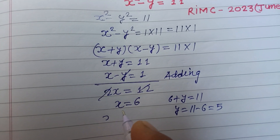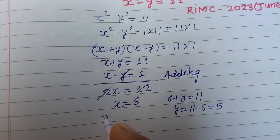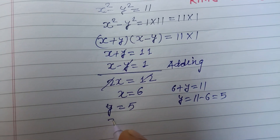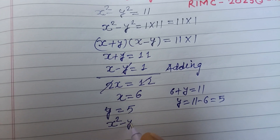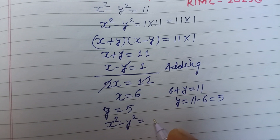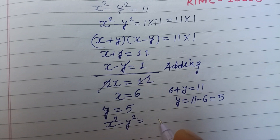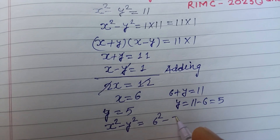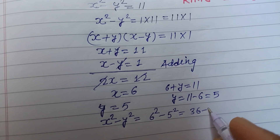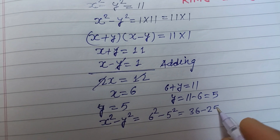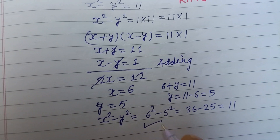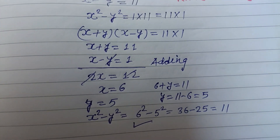So x is 6 and y is 5. Now checking: x squared minus y squared is 6 squared minus 5 squared, which is 36 minus 25, and this is 11. So the equation is correct.